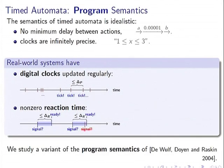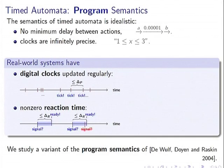In reality we have digital clocks, so we can only measure time with clock ticks. This period could be very small but still it's some positive period. Also we have reaction times, which means that when the system receives a signal or interrupt, it has to spend a little bit of time treating the signal.